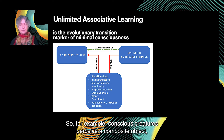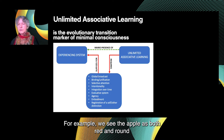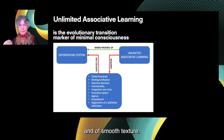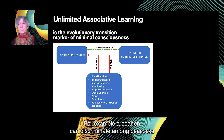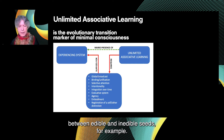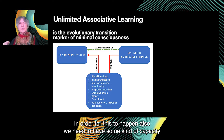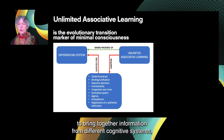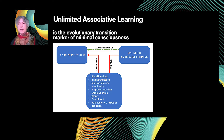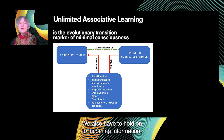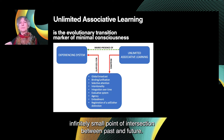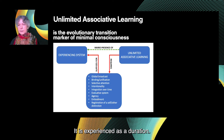For example, conscious creatures perceive a composite object or action as an integrated whole — we see the apple as both red and round and of a smooth texture. This allows us to make discriminations: a peahen can discriminate among peacocks that differ subtly in the color and pattern of their tails; a mouse can discriminate between edible and inedible seeds. In order for this to happen, we need the capacity to bring together information from different cognitive systems — sensory, memory, value — and bind them so that comparisons, discriminations, generalizations, and evaluations become possible. A conscious being also holds on to incoming information; the present is not an infinitely small point but has duration — it is experienced as a duration.